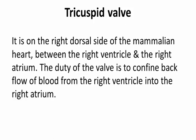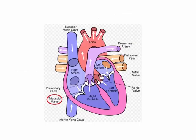Tricuspid valve. It is on the right dorsal side of the mammalian heart, between the right ventricle and the right atrium. The duty of the valve is to prevent backflow of blood from the right ventricle into the right atrium.